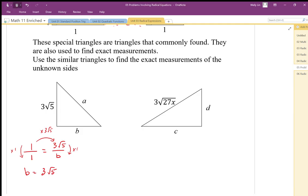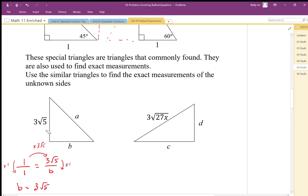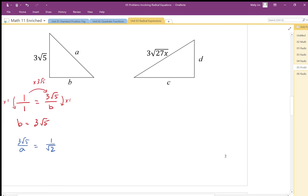To find, solve for side A, I'm going to use the ratio 3 root 5 to A is equal to 1 to root 2. So the vertical side to the hypotenuse is the same as the vertical side to the hypotenuse. The direction is important.